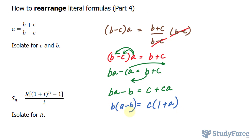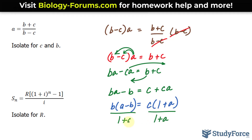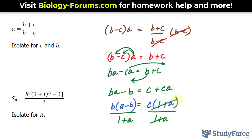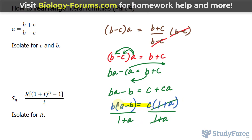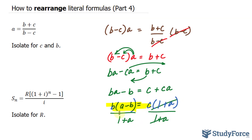Now, if I divide both sides by one plus a, one plus a and one plus a cancel out, and we have isolated for c. I'm highlighting the equation.